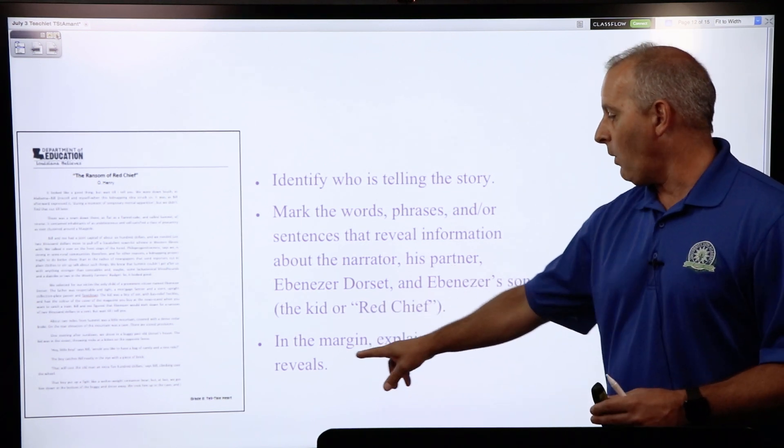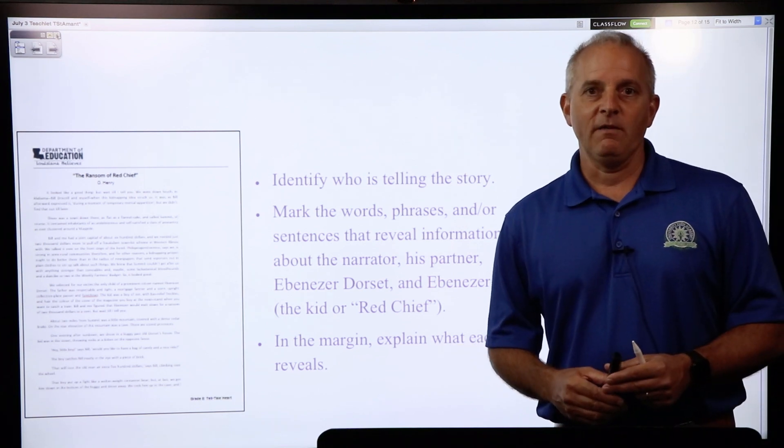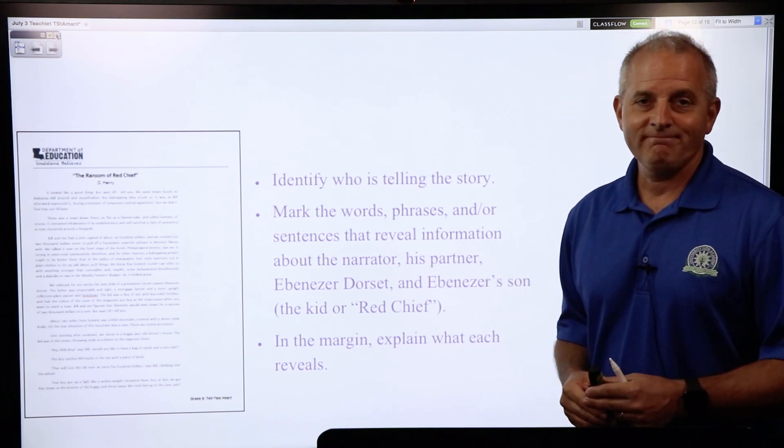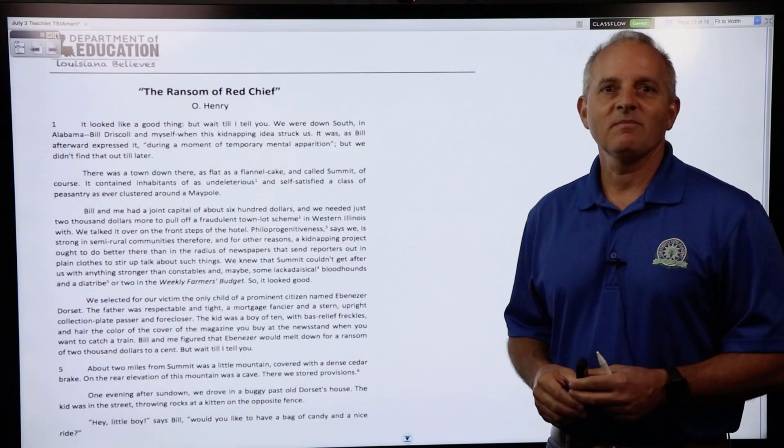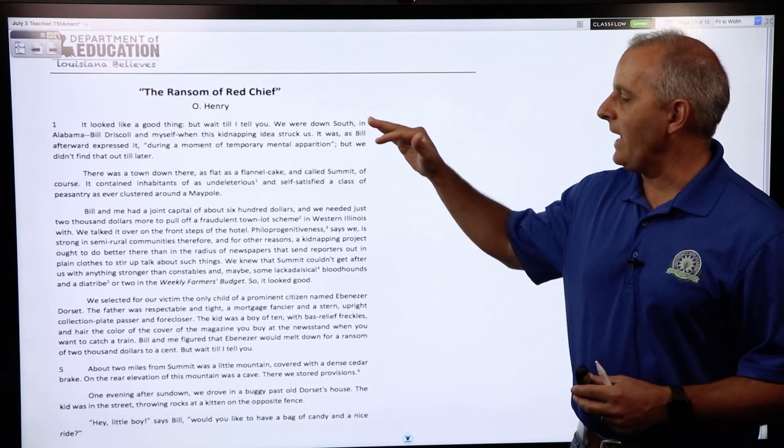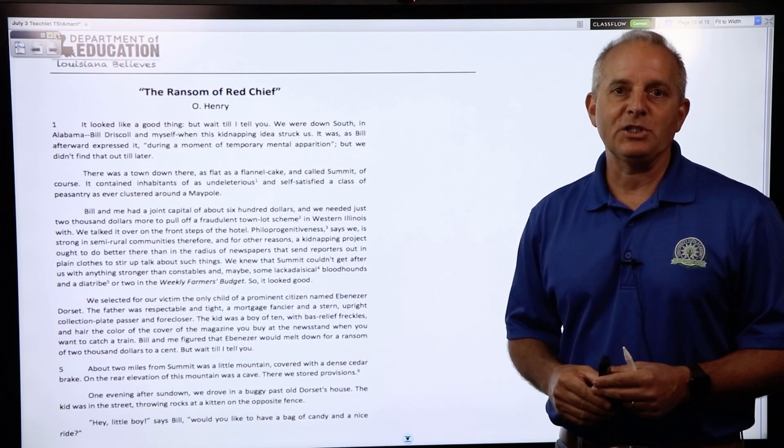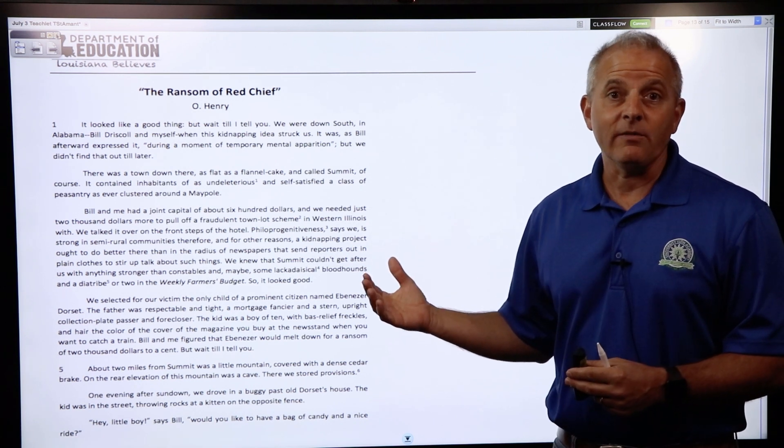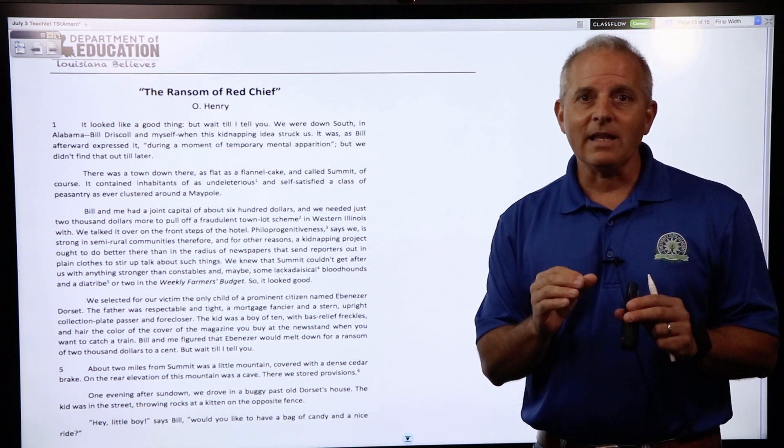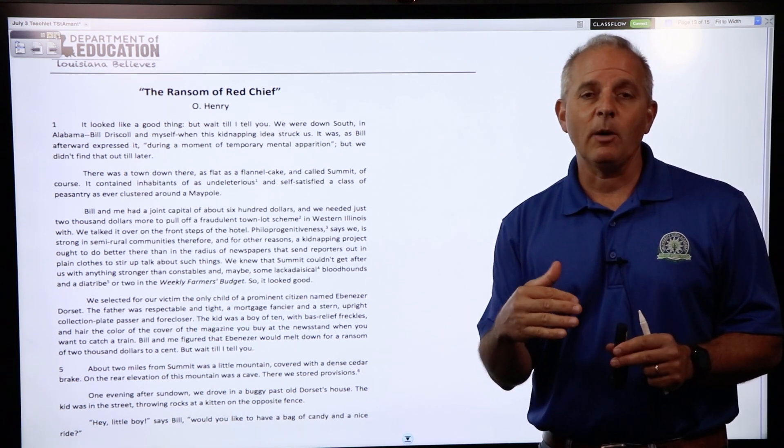In the margin, explain what each of the highlighted portions reveal. So I'm not going to read the entire excerpt from The Ransom of Red Chief, just going to read some parts of it, and we're going to highlight or annotate some parts that help us reveal what kind of character the narrator is.